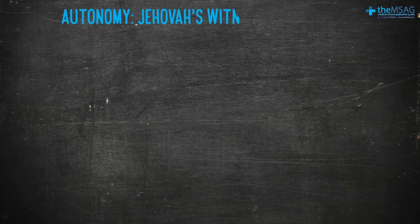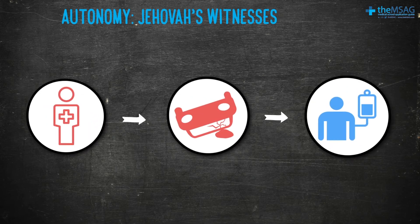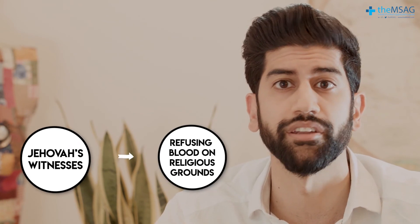There may be circumstances in your career where a patient has exercised their right to autonomy before the fact. The classic medical school interview example is a Jehovah's Witness patient brought into A&E unconscious who requires a blood transfusion. The patient may have created a legal document making their views regarding a specific decision clear in the event they are unable to give consent. This is known as an advanced directive — in this case, a directive refusing blood on religious grounds.